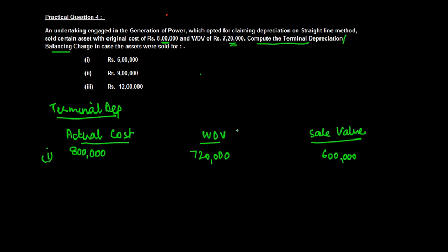If the sale value is less, what does this mean? This means that while the assessee would have claimed a depreciation of 7 lakh 20,000 if he didn't sell the asset, now what he is getting in return is only 6 lakh, which means he is supposed to get some further depreciation.